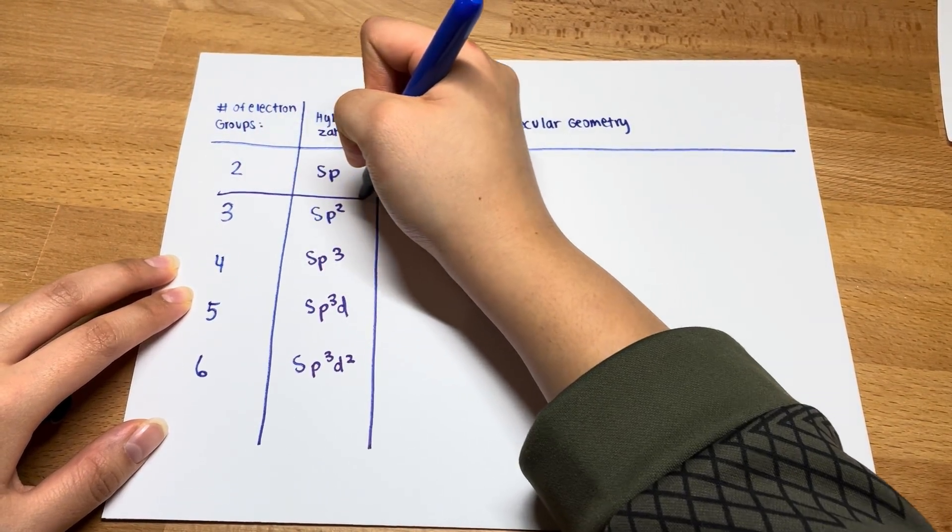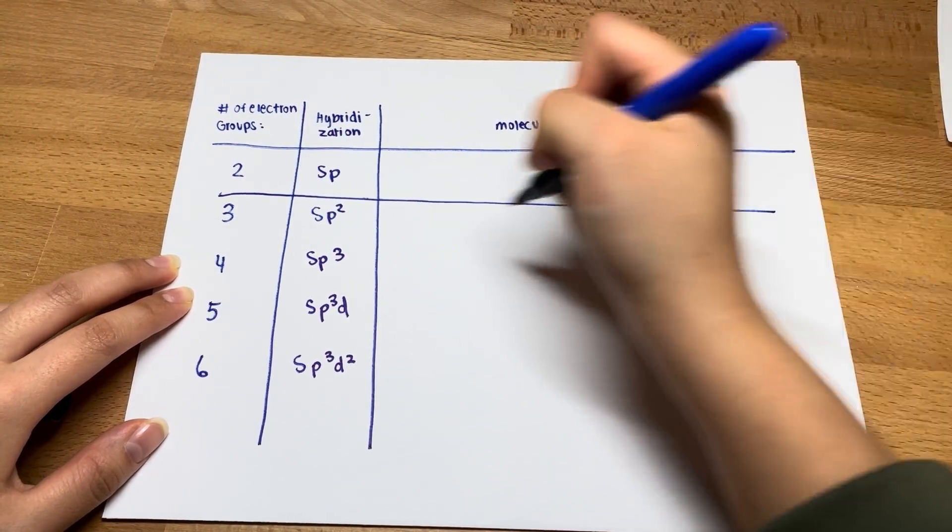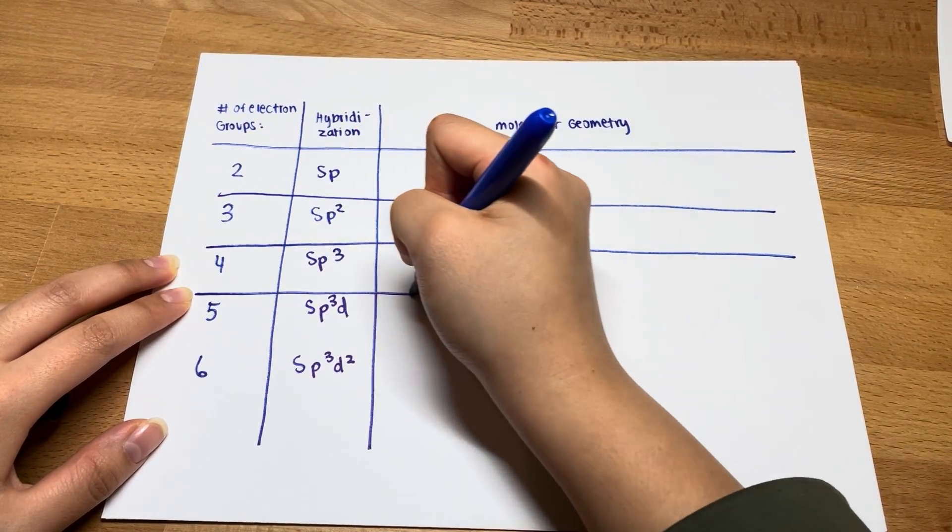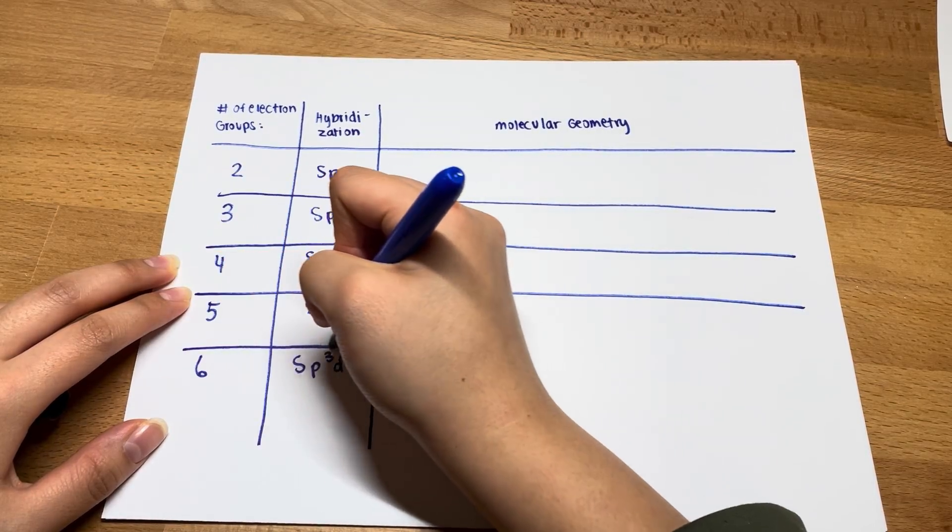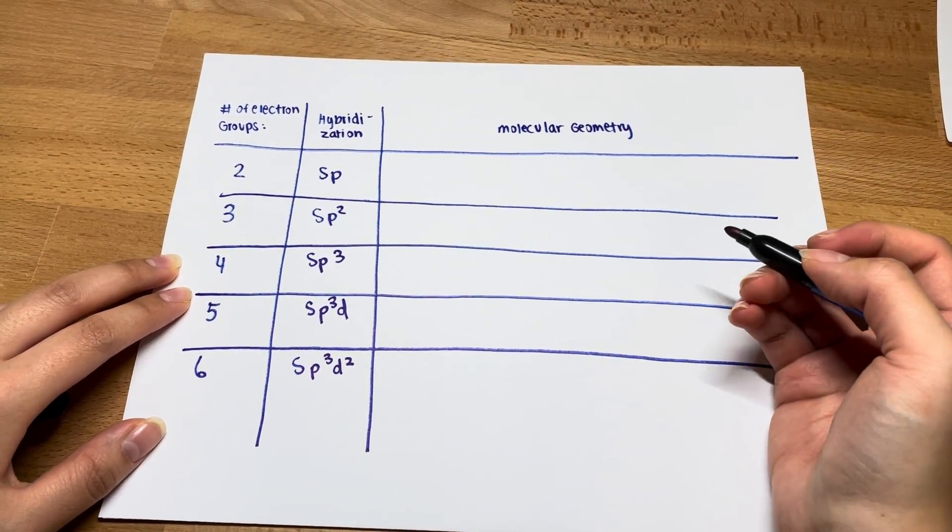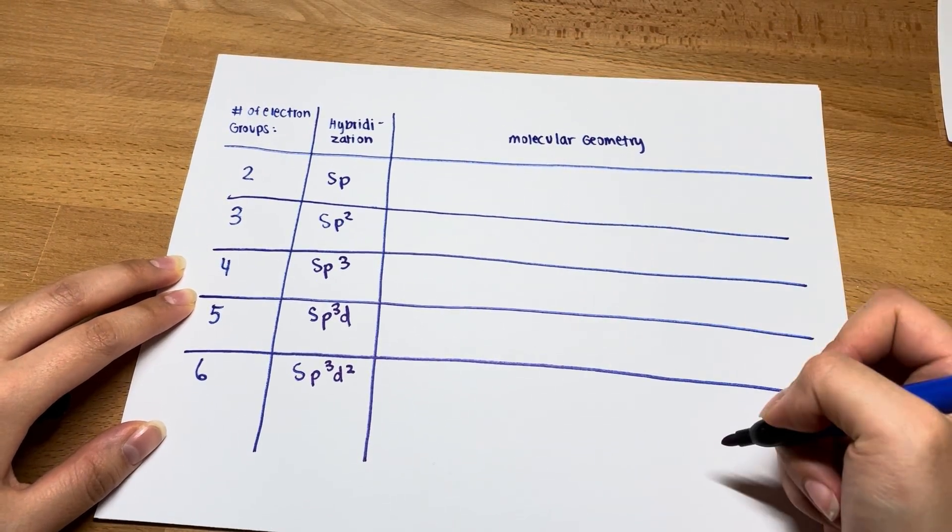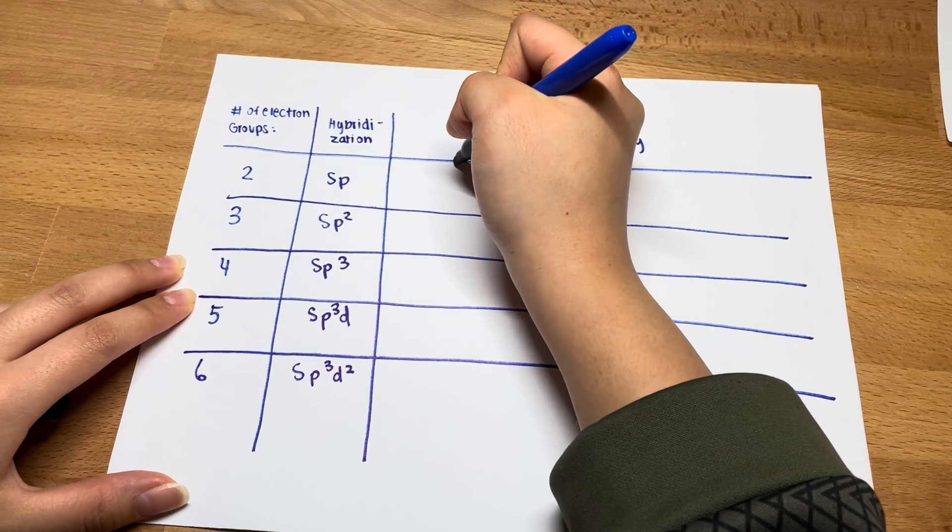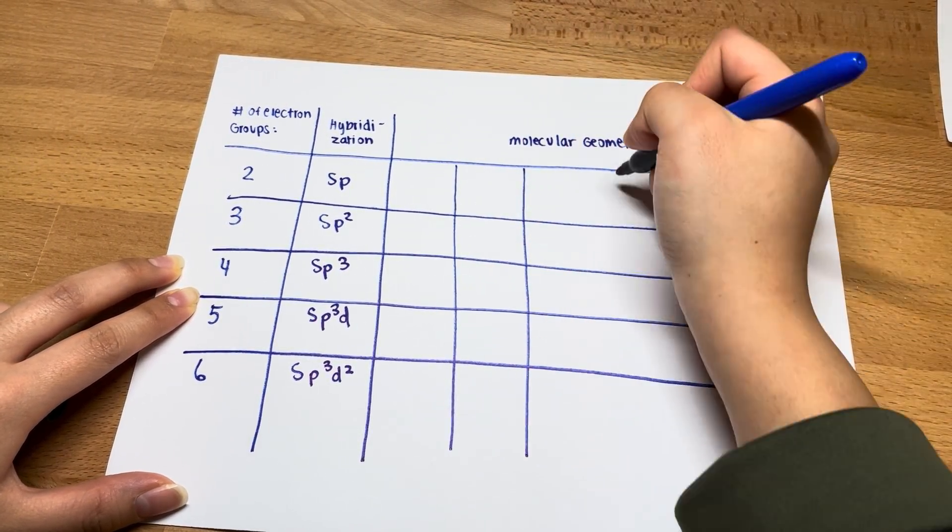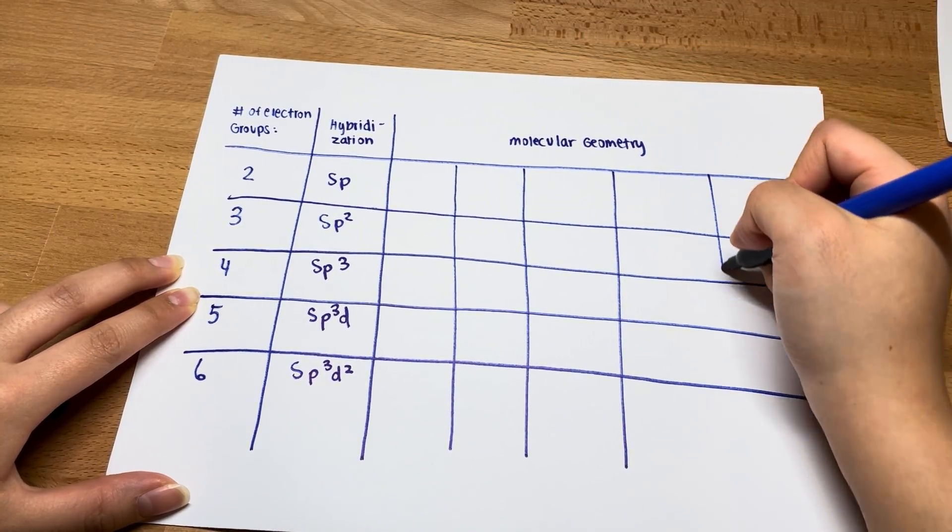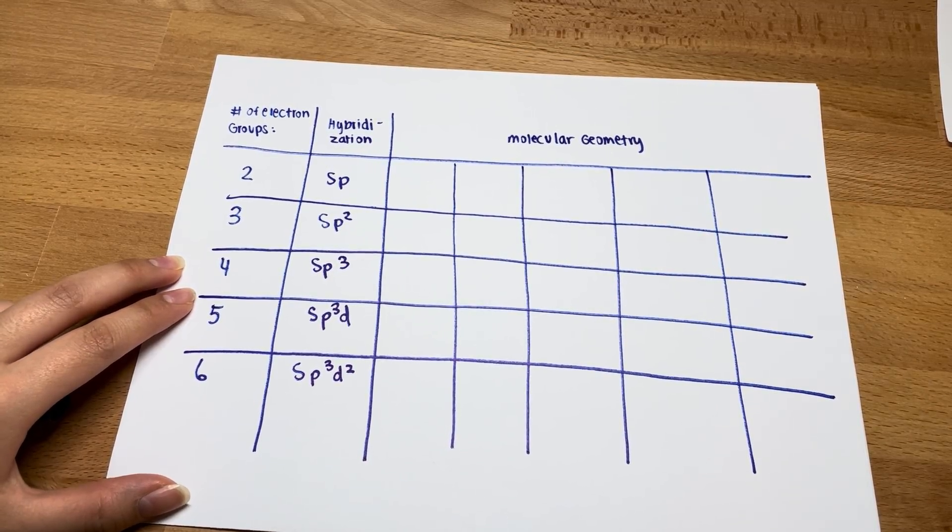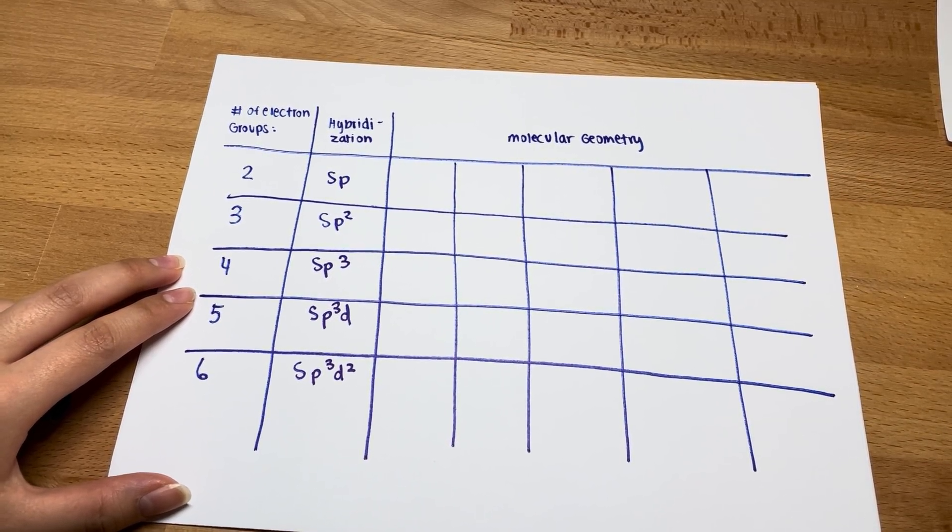Now you want to draw more rows because this is how you're going to differentiate between each electronic group. Now that you have this, you want to make 5 columns. So draw 1, 2, 3, 4, 5. After that, here's how you're going to remember the molecular geometry.